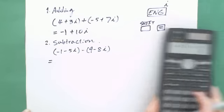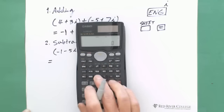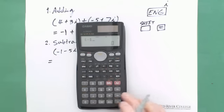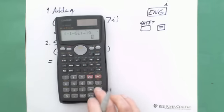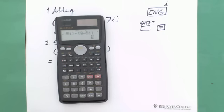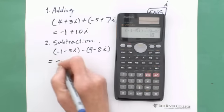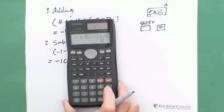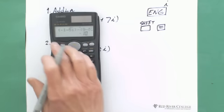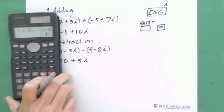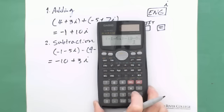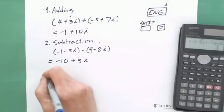You enter the number bracket, -1 minus 5i, subtract 9 minus 8i. And hit equal sign. It gives you -10, the real number portion. To express the complex number portion, shift, equal. It gives you 3, so plus 3i.